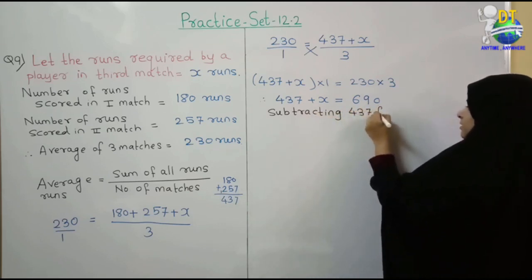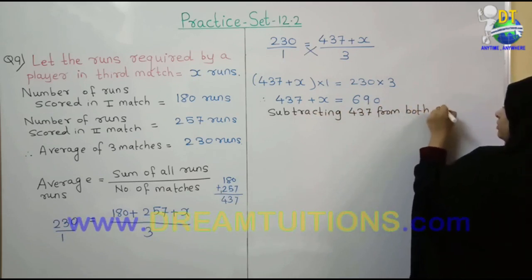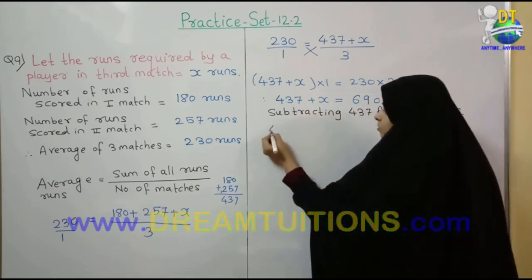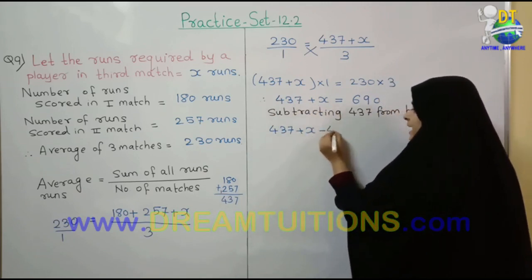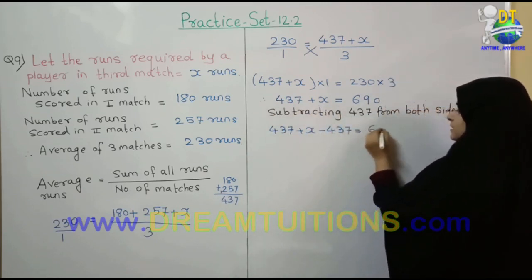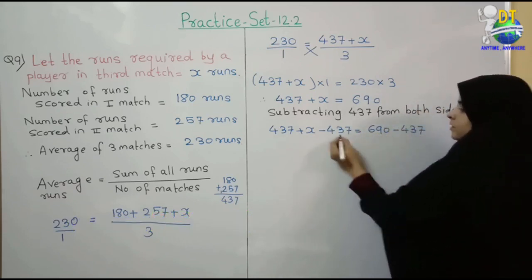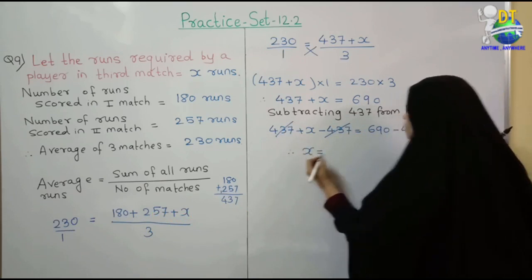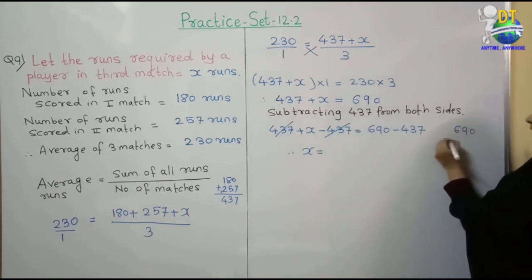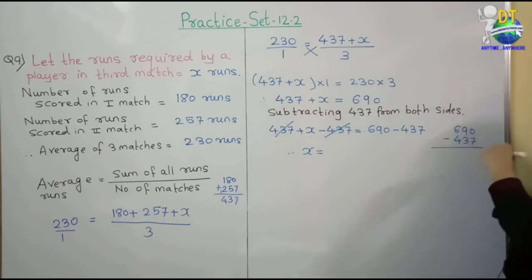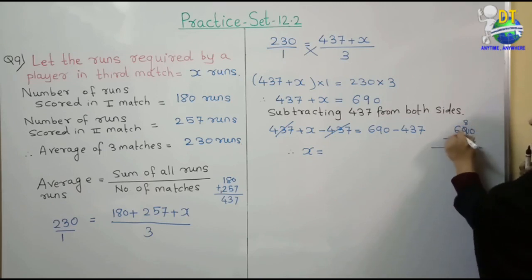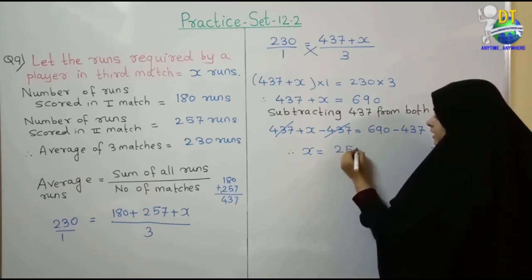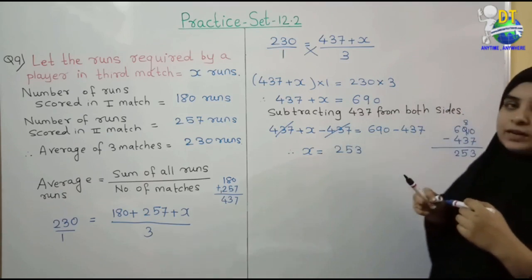437 plus x is equal to 690. Subtracting 437 from both sides — 437 cancel — therefore x is equal to 690 minus 437. Simple subtraction: 0 minus 7 — borrow — 10 minus 7 is 3, 8 minus 3 is 5 — wait, 8 minus 5 is... 690 minus 437 = 253. तो 3rd match में उस player को 253 runs निकालने होंगे।